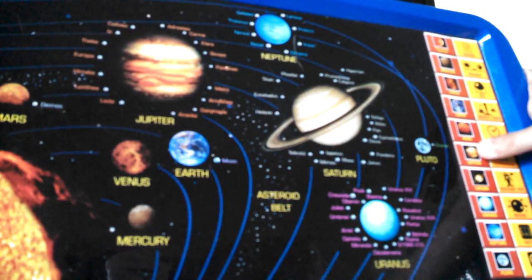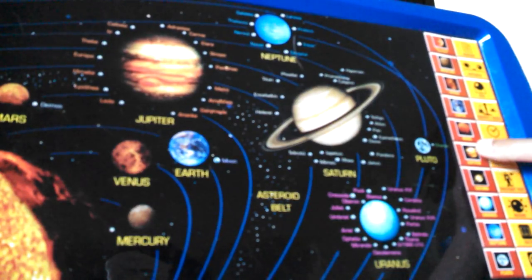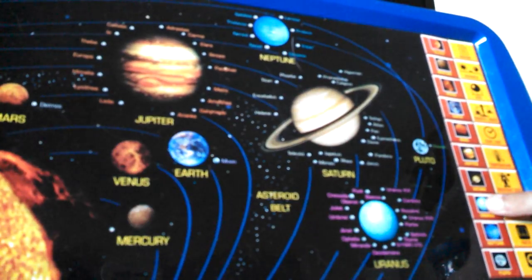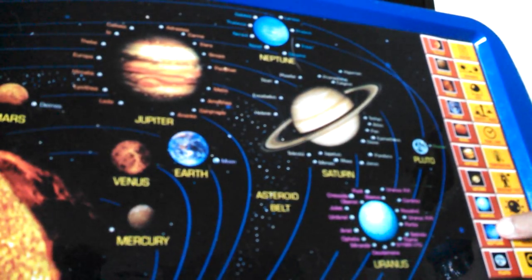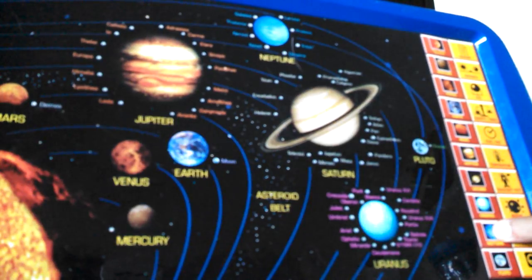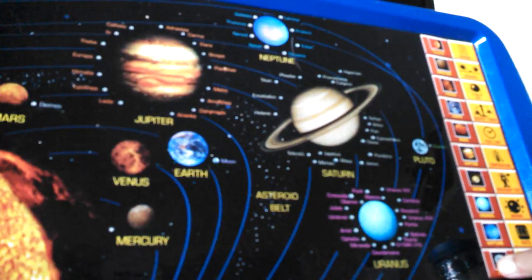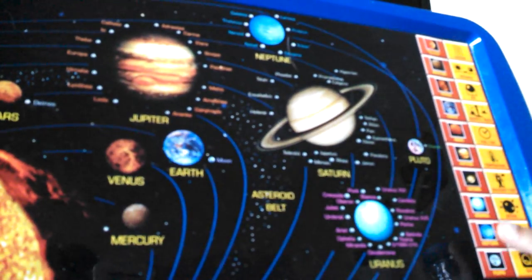This is the planet Jupiter. This is the planet Saturn. This is the planet Uranus. This is the planet Neptune. This is the planet Pluto.